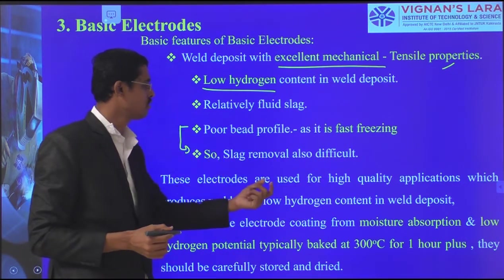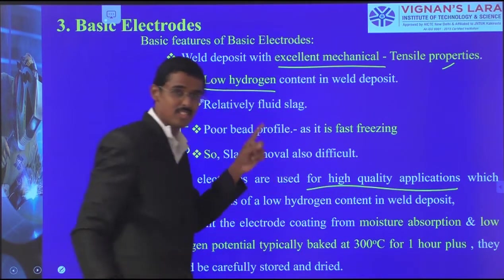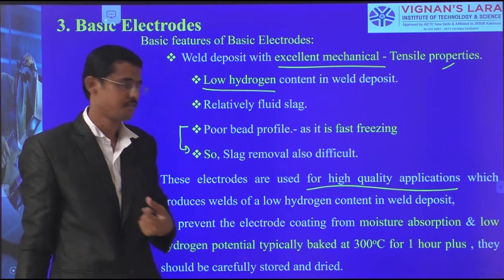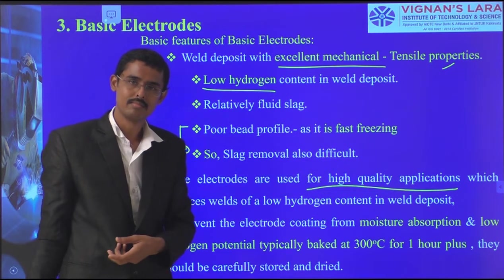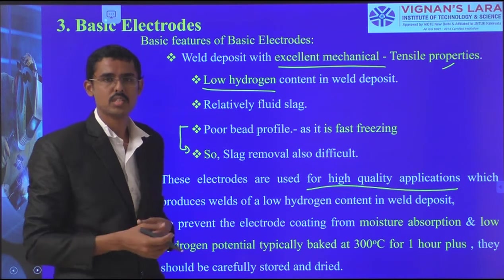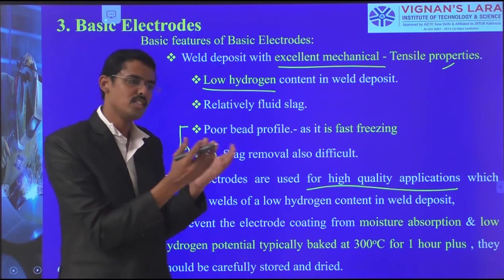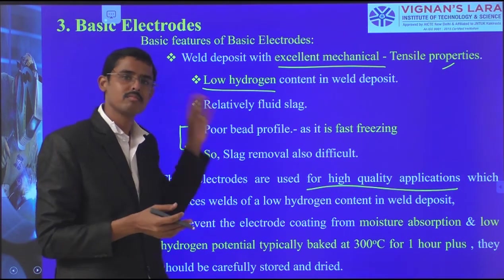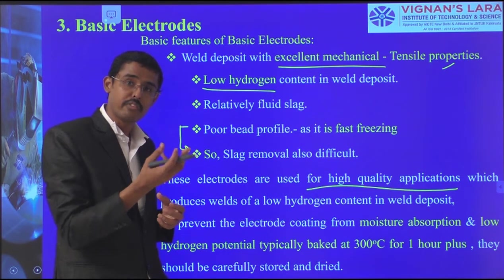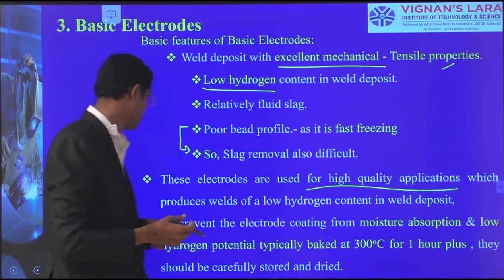Basic electrodes are used for high-quality applications because hydrogen is not there, cracks are not formed. They produce welds of low hydrogen content, therefore strength increases. The electrode coating must be prevented from moisture absorption. We use ovens — baking up to 300°C for one hour. They should be carefully stored and dried. For basic electrodes, oven drying is required; for rutile and cellulose, there is no need for oven drying operations.